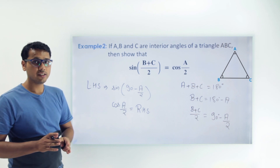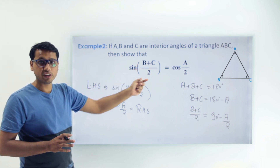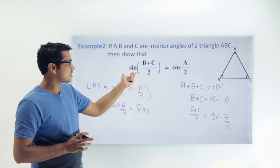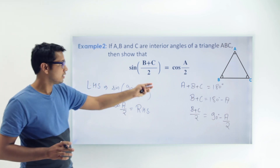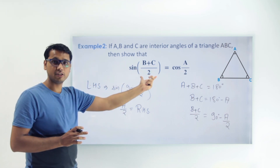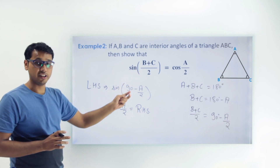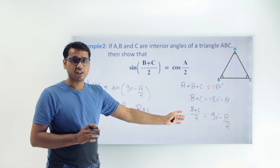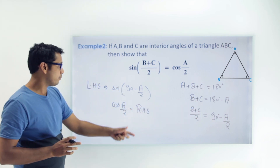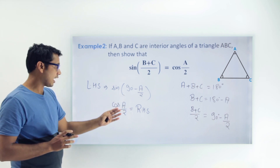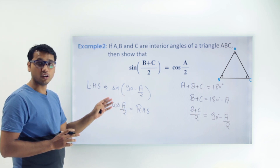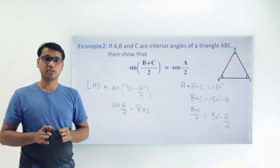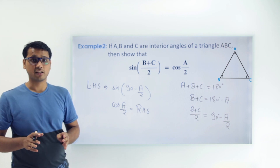Here is how we proceeded: we changed (B + C)/2 into its complementary function because the complementary of sin is cos. So if we change the angle into its complementary form, sin is converted into cos. We first found the complementary function of (B + C)/2, substituted it into the LHS, and calculated that it equals cos(A/2). This is how we solve questions on complementary angles of different trigonometric ratios.